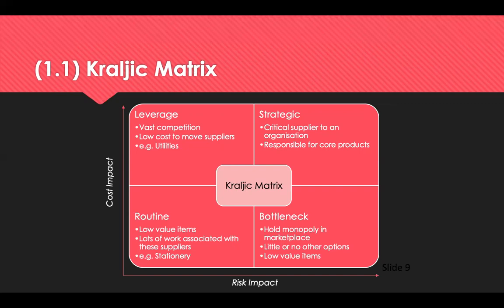Think about some examples of the direct and indirect procurements you may have made or envisage making. Determine the risk and importance of each procurement within an organisation you know, then determine the type of relationship that should be applied. If it costs lots of money and is high risk, it sits in the strategic box. High cost but low risk is leverage. Low cost, low risk is routine. And the interesting one — where we don't spend much money but the risk is really high — is the bottleneck supplier. This usually occurs when there is a monopoly supplier in the market and they're the only ones you can buy from.